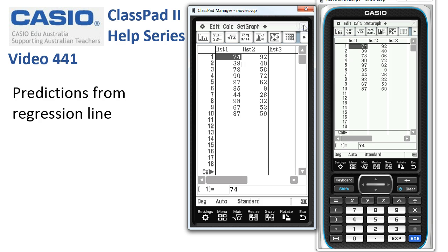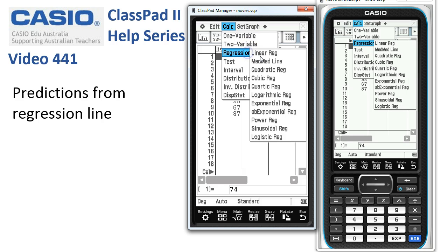Now I'm just going to close the graph window and we'll start again on Method 2. Again, we go through the same process: Calc, Regression, Linear Regression.